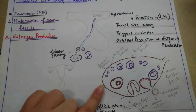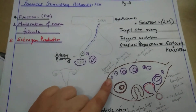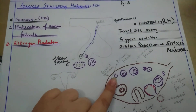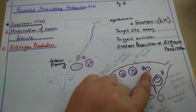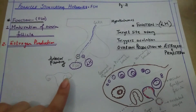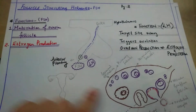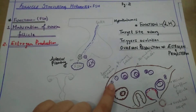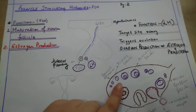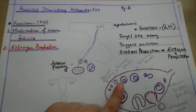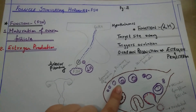As you can see in this diagram, this is an enlarged diagram of the ovary. You can see follicles here — these ovarian follicles are present in the female ovary and undergo growth and division. Follicle stimulating hormone causes the maturation of these ovarian follicles. If asked in MCQs which hormone performs ovarian follicle maturation, the answer is follicle stimulating hormone.